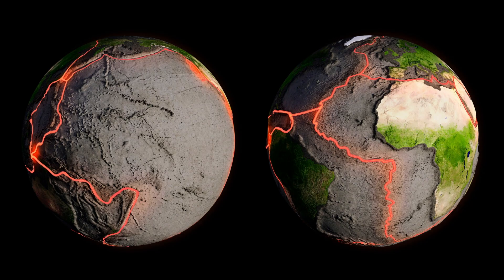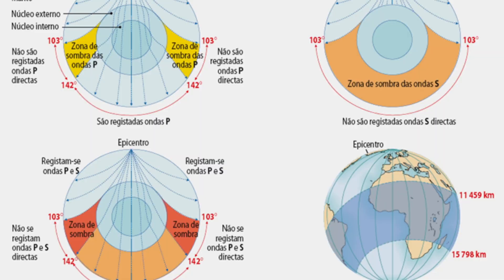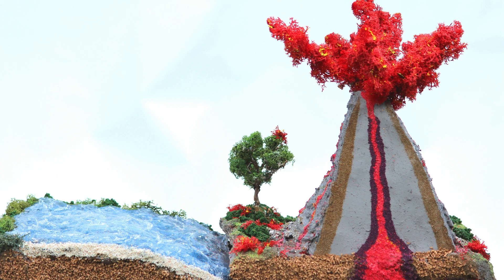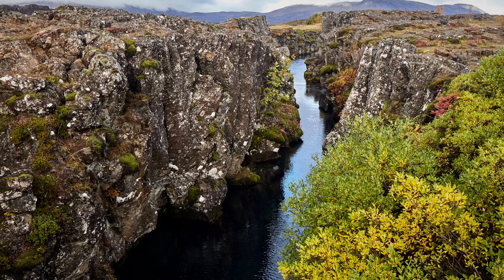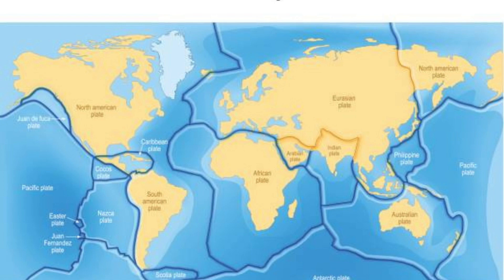The current view holds that convection currents in the Earth's interior are responsible for all these movements. According to the theory of plate tectonics, the lithosphere — the upper part of the Earth's mantle — is not an unbroken layer, but consists of several rigid plates floating on the asthenosphere.